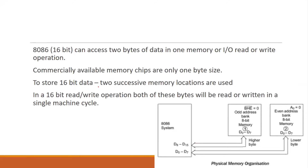To store 16-bit data, two successive memory operations are used. In 16-bit read or write operations, both bytes will be read and written in a single machine cycle — it is a parallel read/write.